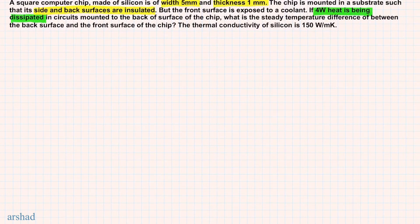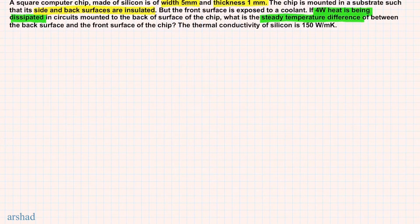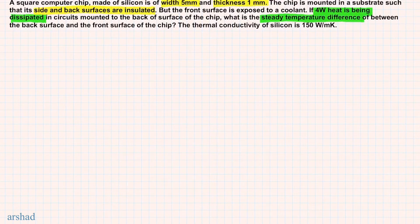Then what would be the steady temperature difference between the back surface and the front surface of the chip? The problem also gives us the thermal conductivity value of the chip material, which is silicon, and it says that it's 150 watts per meter kelvin. So we know the thermal conductivity value and we also know that this is a square chip, which is going to come in very handy.